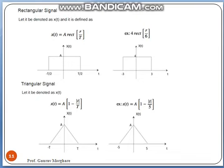There are a few more signals. The rectangular function: its general formula is rect(t/τ), where the width of the pulse is τ, spanning from -τ/2 to +τ/2. For example, rect(t/6) spans from -3 to +3. Similarly, the triangular signal is denoted by Λ(t/τ) = A(1 - |t|/τ), where τ is the width.